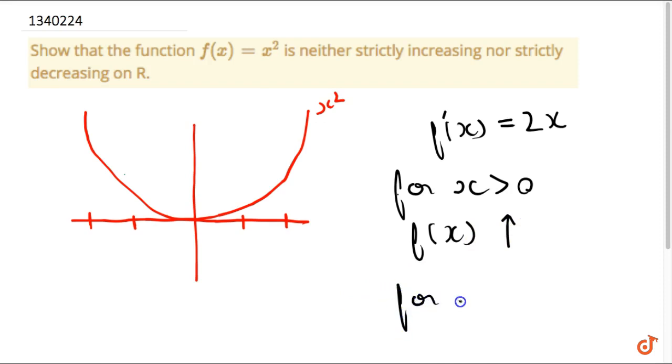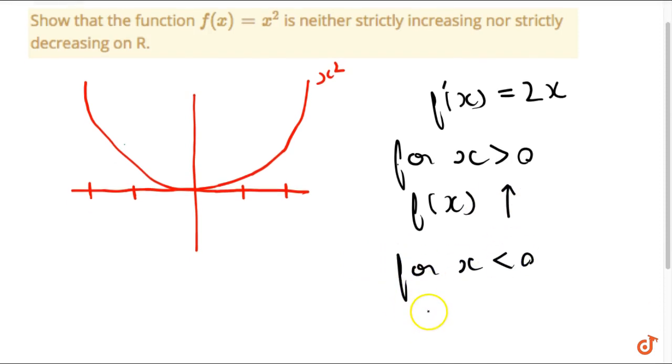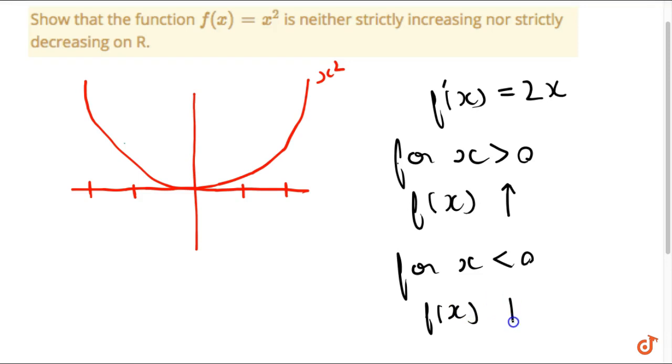But for x less than 0, f(x) is a decreasing function because the values f(x) had before are greater than the values it has now. This height is greater than this. So it is a decreasing function in the negative side and an increasing function in the positive side.